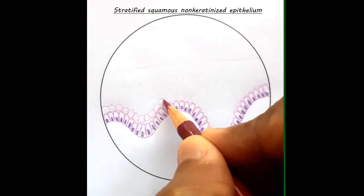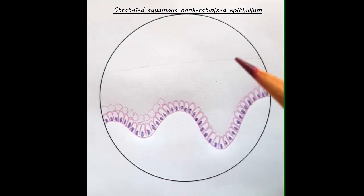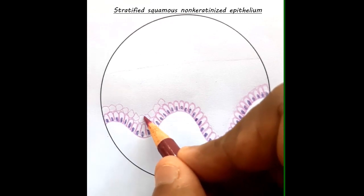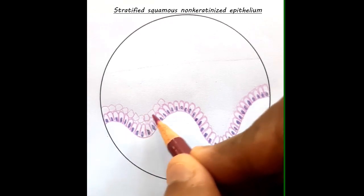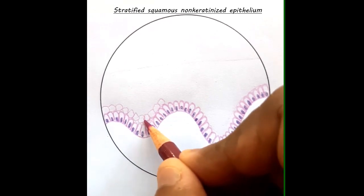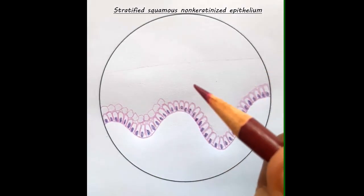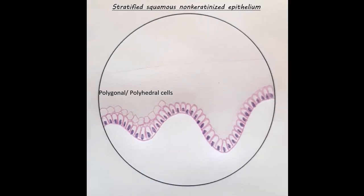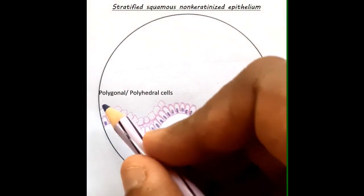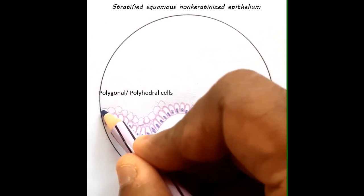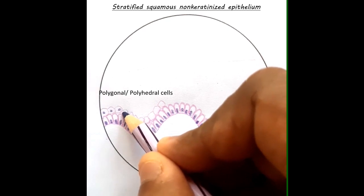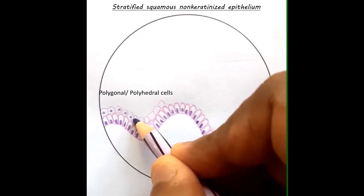Again when we reach the dips, that is where it gets tricky. The cells have to be drawn in such a way that they touch the apical surface of the columnar cell. So I am adjusting it a little bit so that the edges are touching the apical surface of the columnar cell. Now it is time to draw the nuclei. The nucleus of the polygonal cells are round and centrally placed.